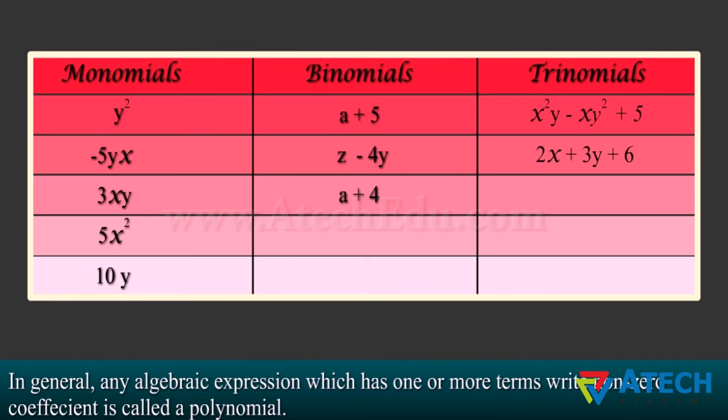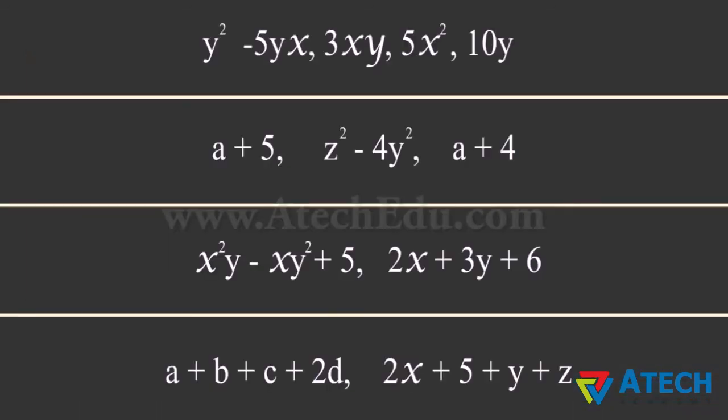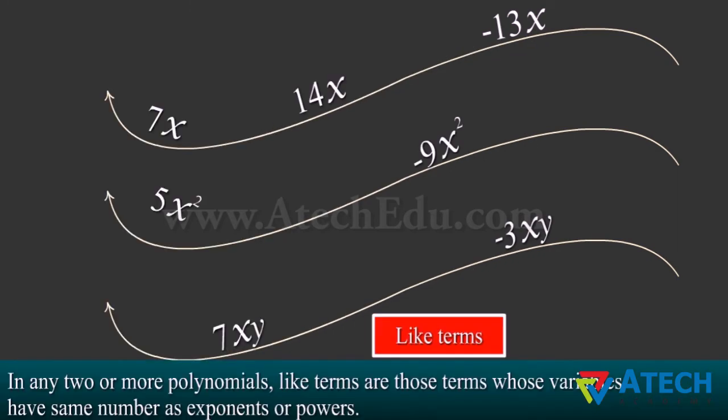In general, any algebraic expression which has one or more terms with nonzero coefficient is called a polynomial. So, all these are examples of polynomials.